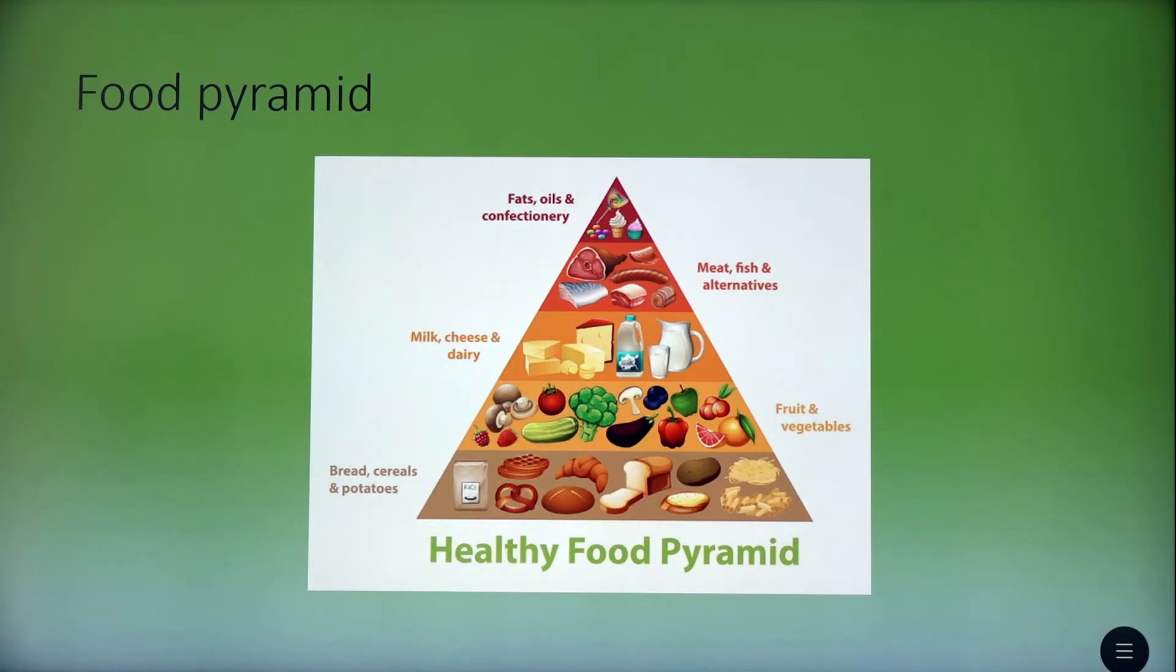Do you also remember the food pyramid? You have learned this in biology too and in the sixth grade or before. It's the food that we are supposed to eat or the healthy food that we should eat every day. Starting with bread, cereals and potatoes. Then going with fruit, vegetables and then with milk, cheese and dairy. Then meat, fish and alternatives. And the last one or the one that we should eat less and less. It's fats, oils and confectionery.